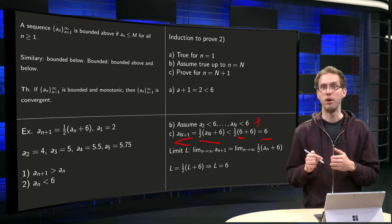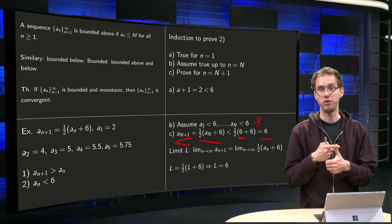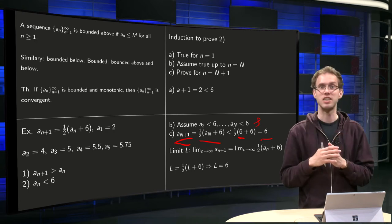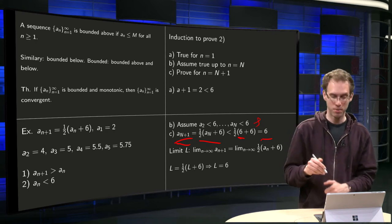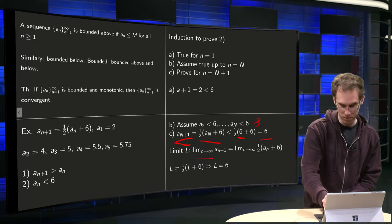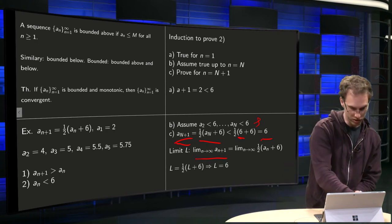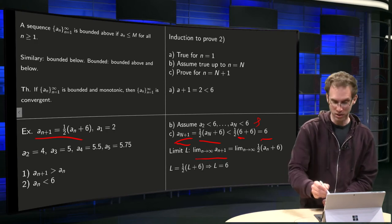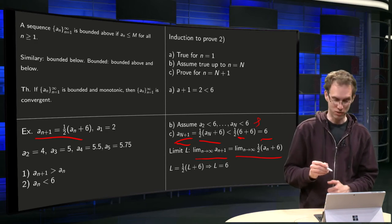And now we have shown that our sequence is monotonic and bounded, which means that the limit exists. Let's call this limit L. Then we know limit n to infinity of an+1. If we take that on the left of our definition here. And this has to be equal to the limit on the right, 1/2(a + 6). This limit equals L.